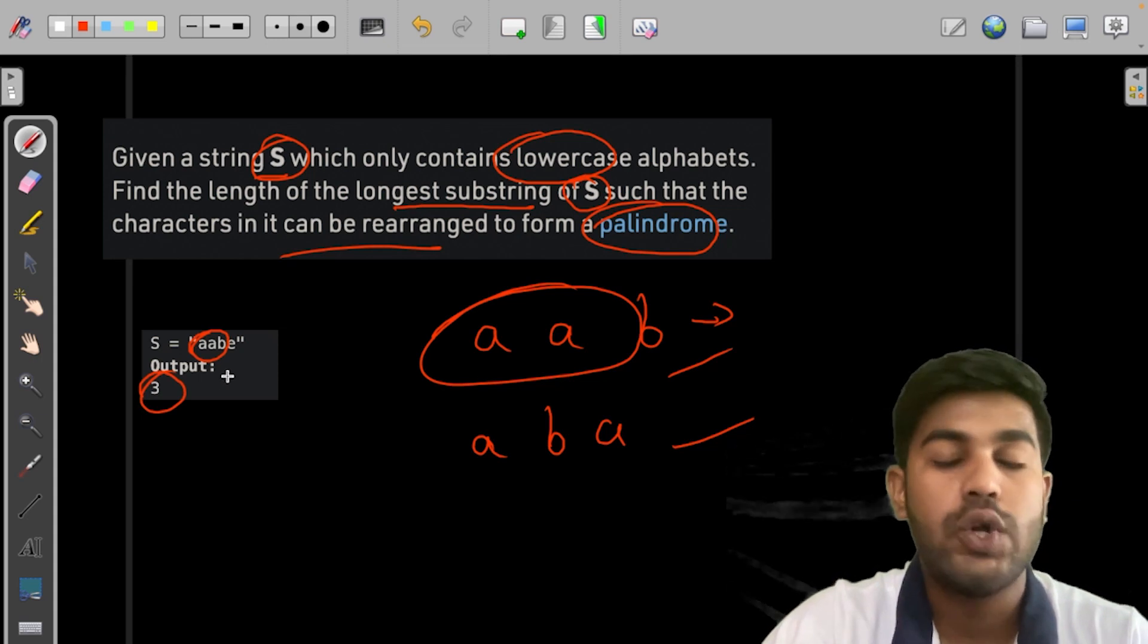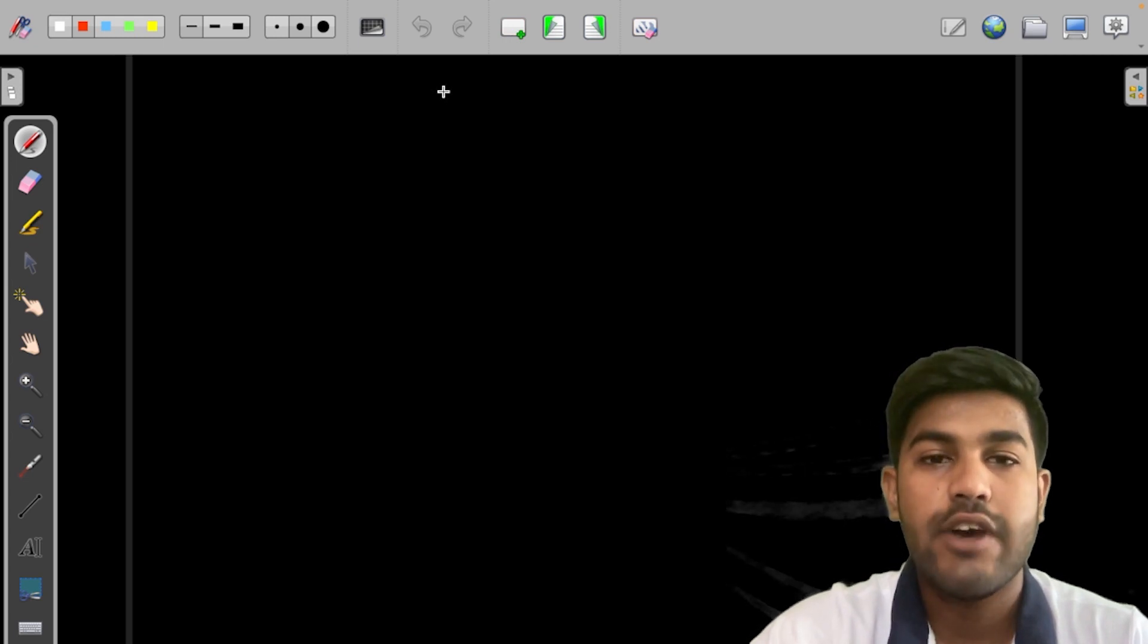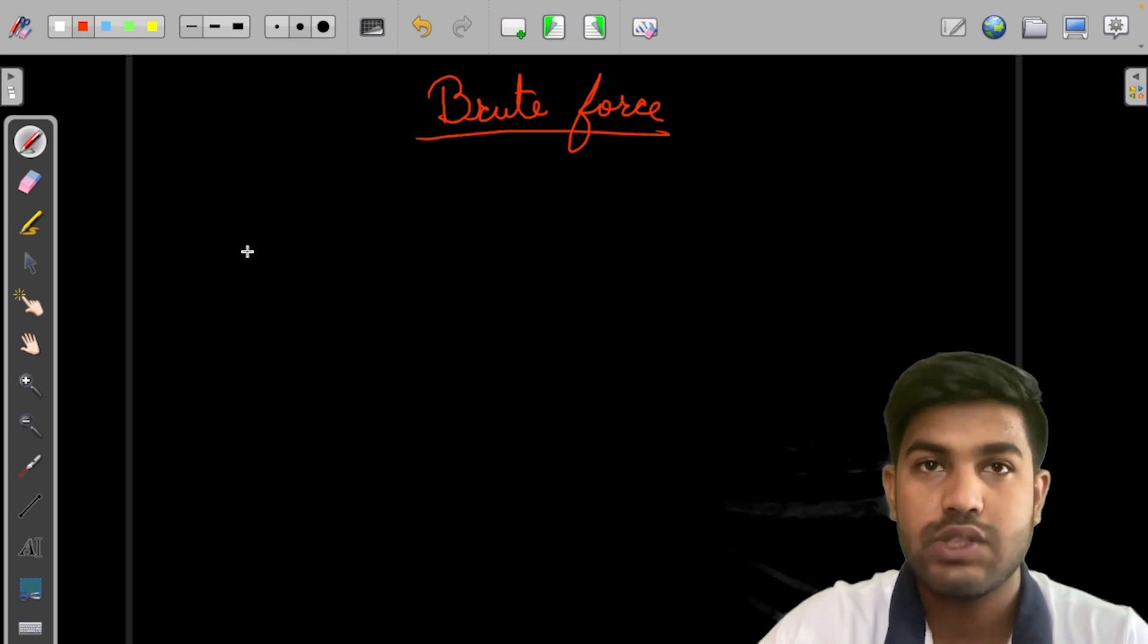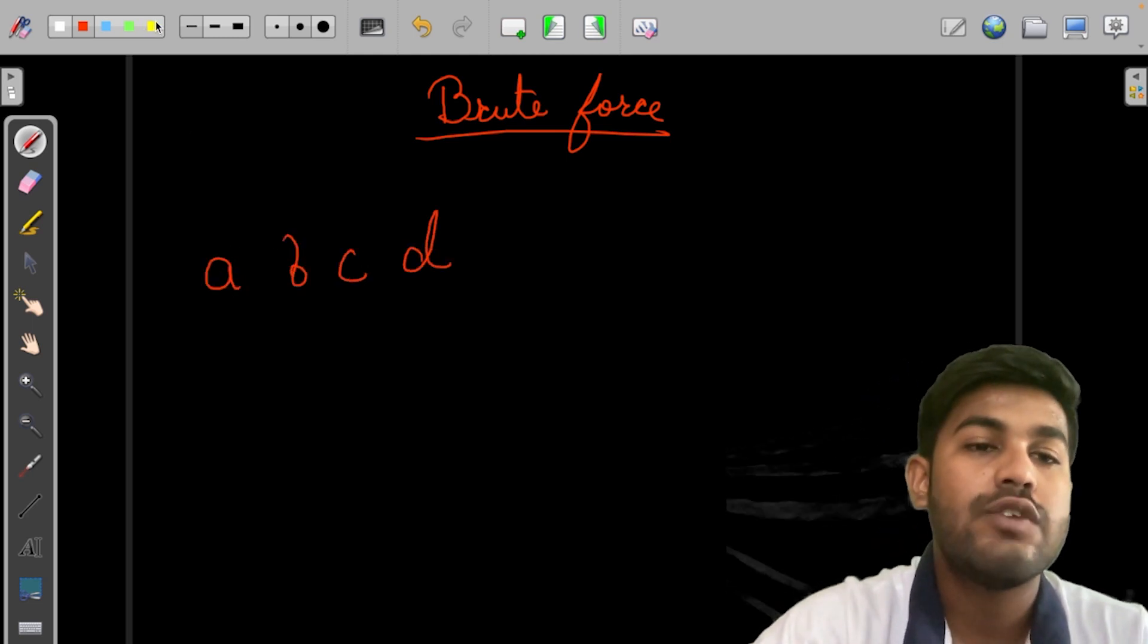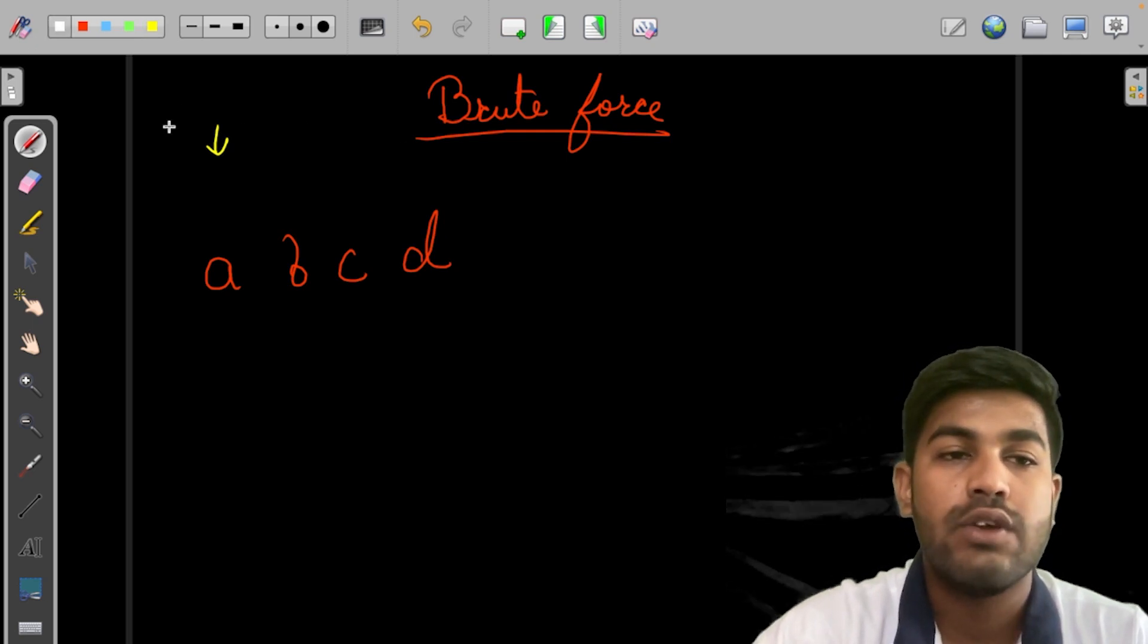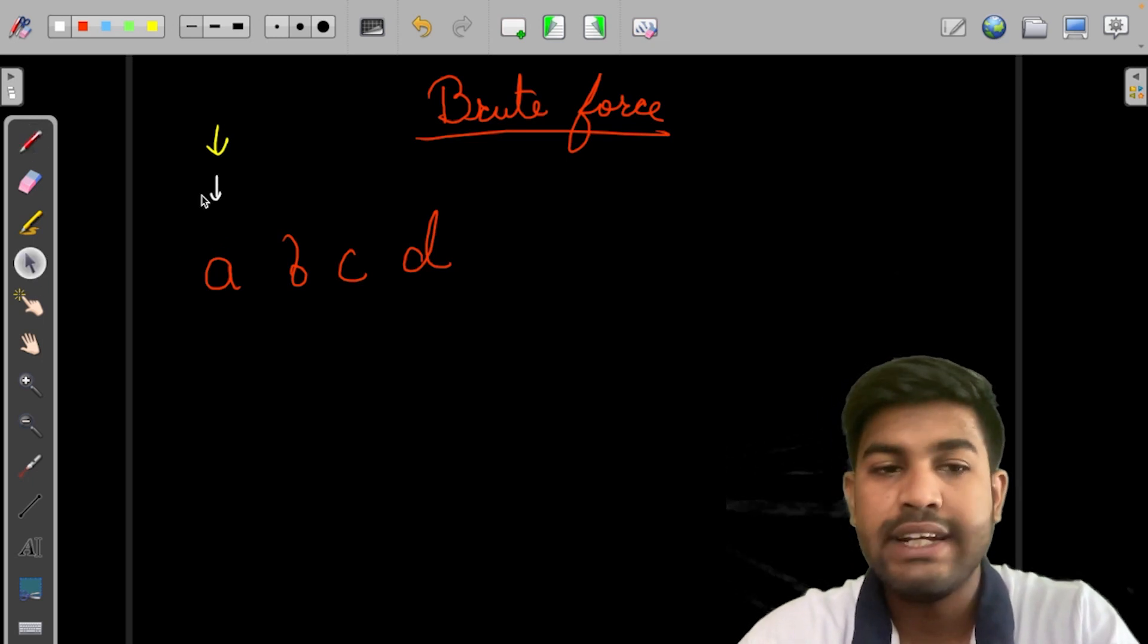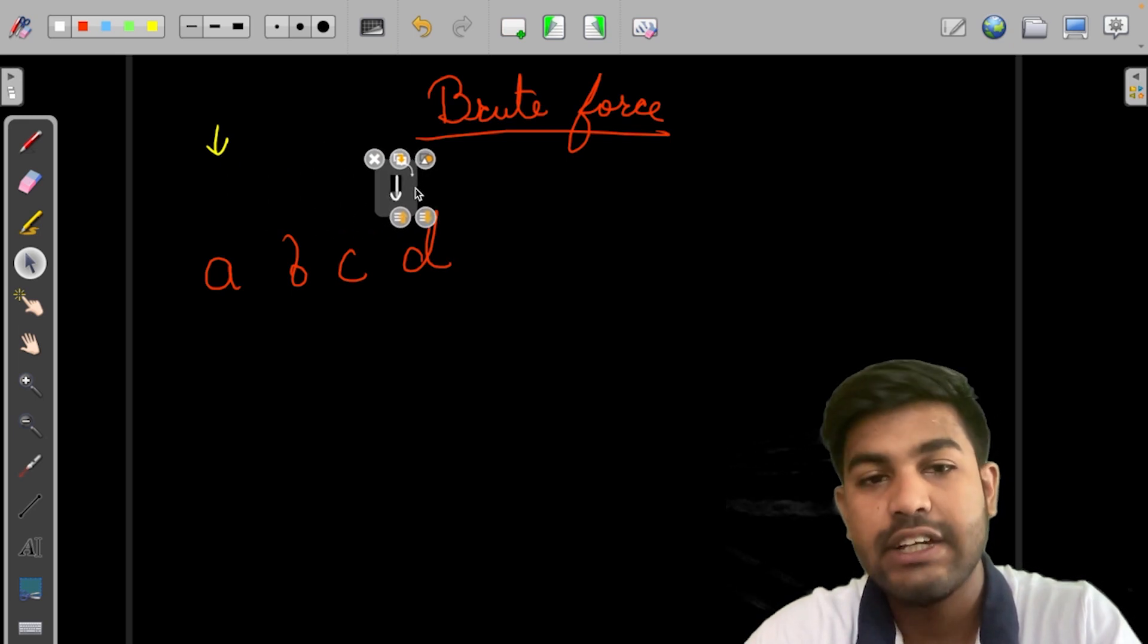Now let's talk about the most naive approach or the brute force approach. The brute force approach for this problem would be to generate all the possible substrings. How to generate all possible substrings? Suppose we have a, b, c and d. So what we would do is we would use a for loop. Suppose it would be pointed here and this would run from 0 till n and the next one would run from here, so it would only contain a, then it would contain a and b, then it would contain a and c, then it would contain a and d.